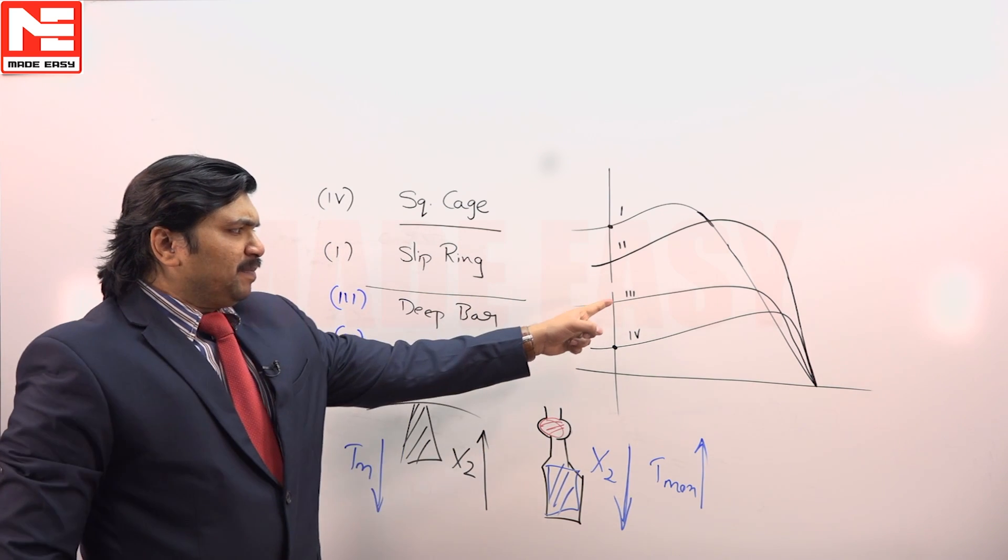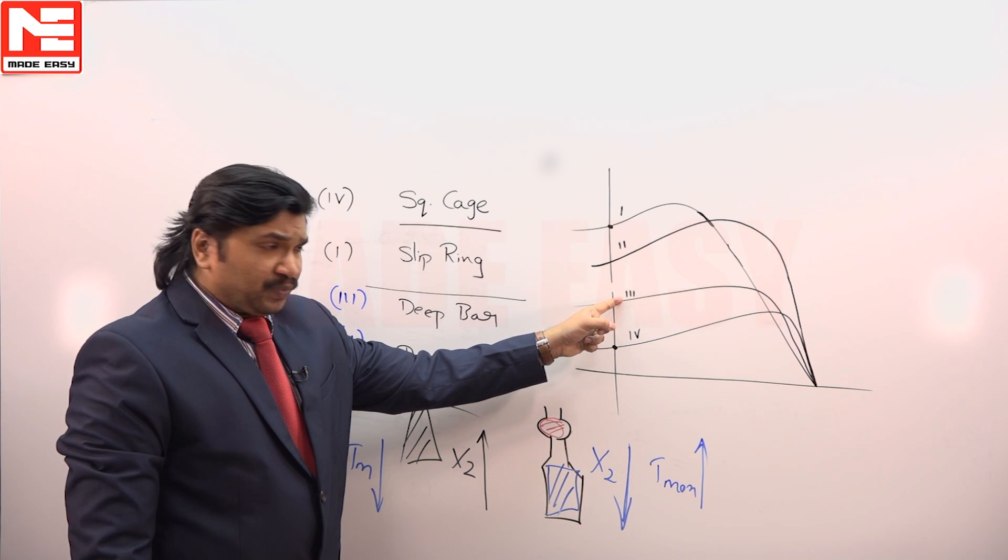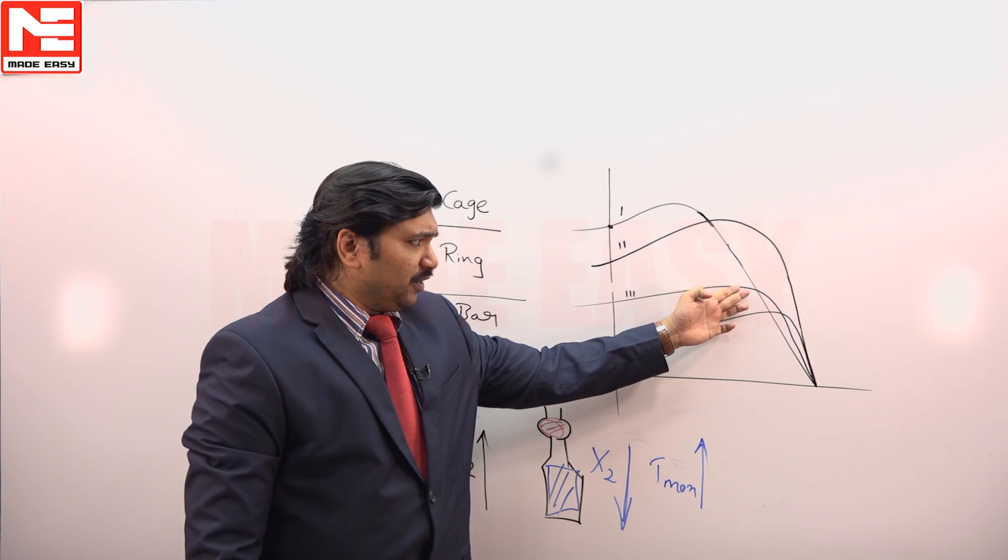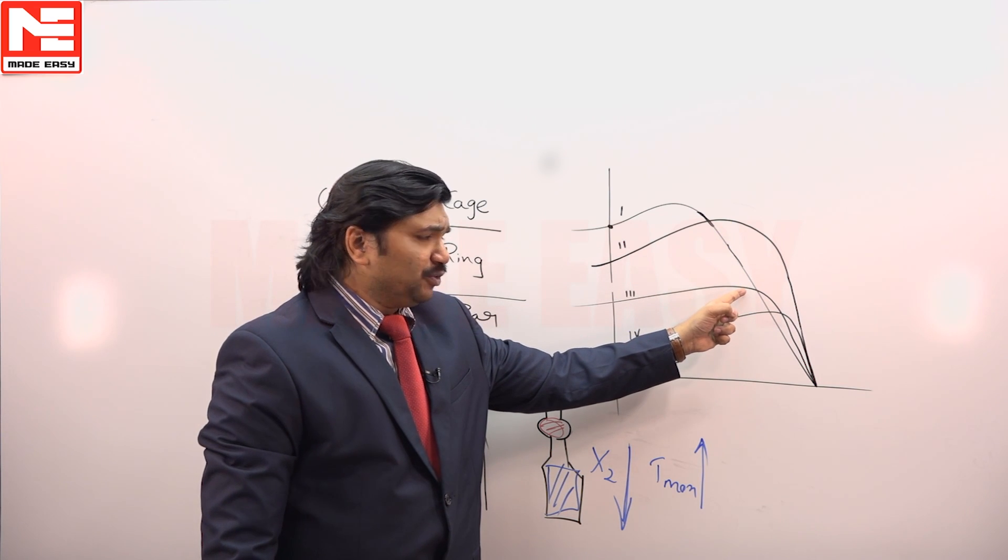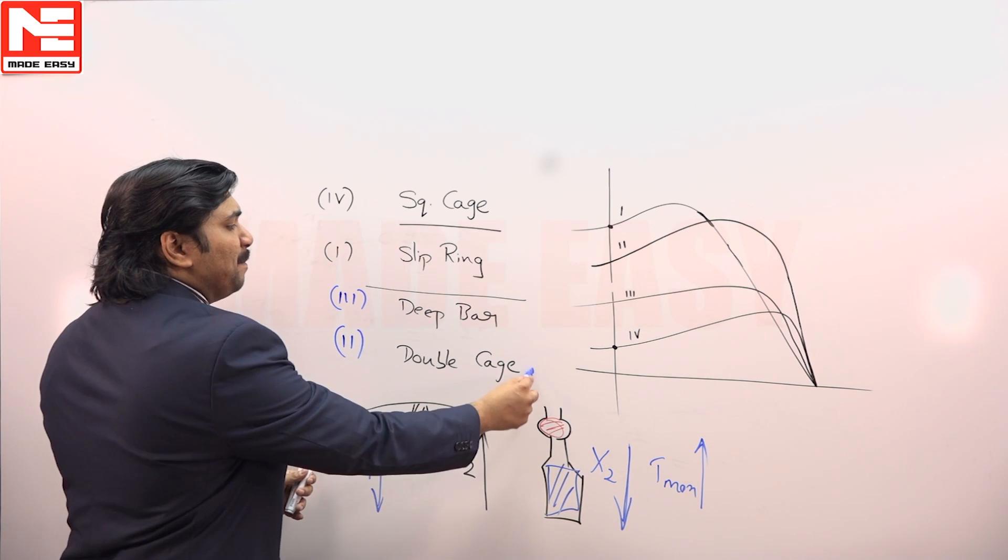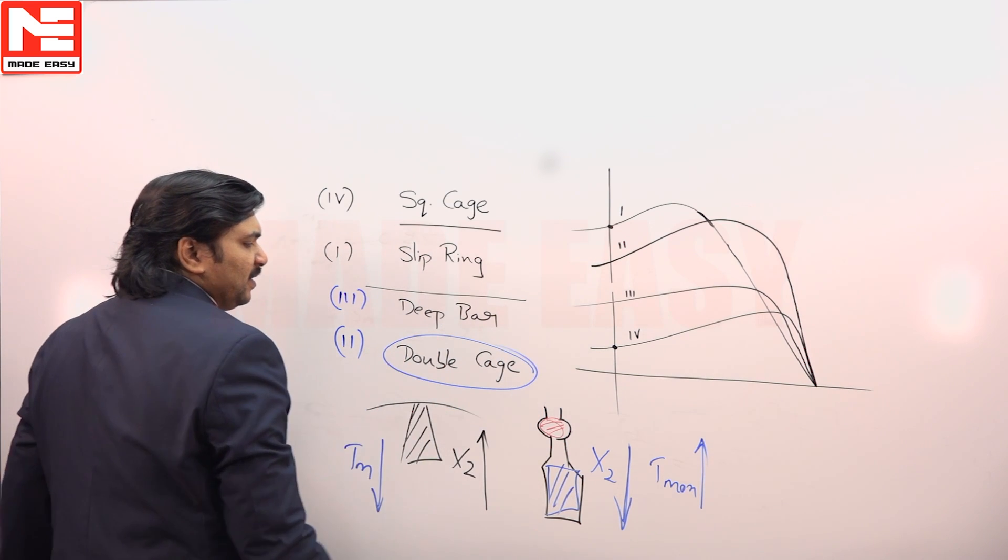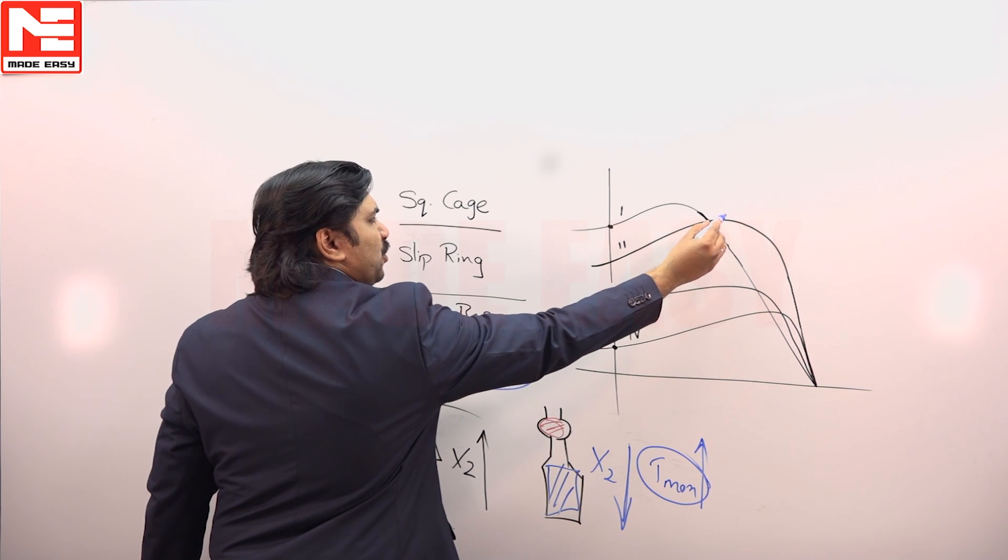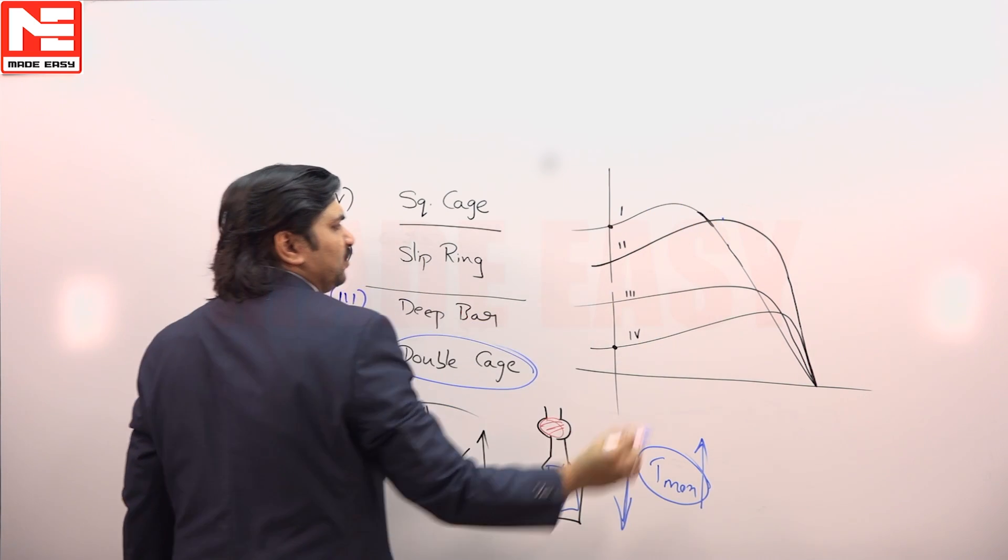So deep bar basically has high X2, it has less torque maximum. First of all, if you compare maximums, this is belonging to deep bar. As double cage has better maximum torque, this curve belongs to double cage. So answer is A.